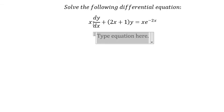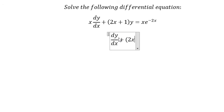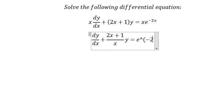First we need to divide both sides by x. So we get dy/dx plus (2x+1)/x times y equals e^(-2x).